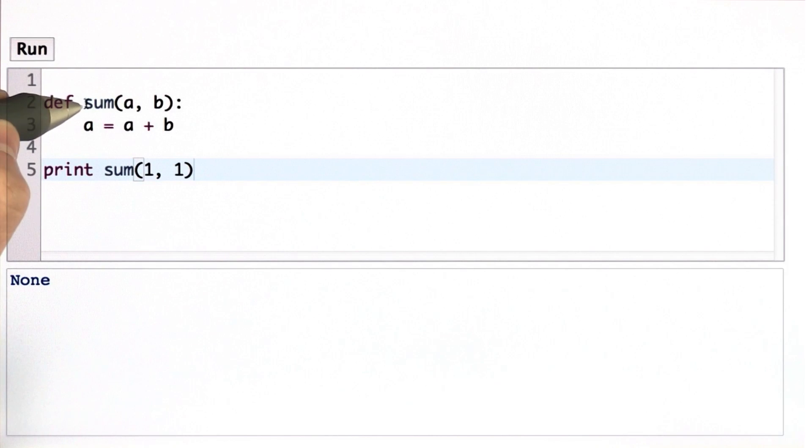The reason the result's none is the sum procedure doesn't actually return anything, so there's no value here. Python uses the special value none to mean there's no value. So that's not very useful. We could pass in bigger numbers. Whatever we pass in, we'll still get the result none because sum never returns anything.